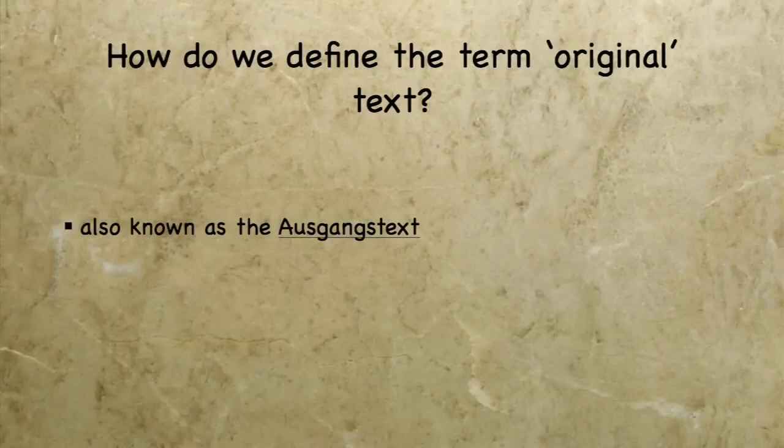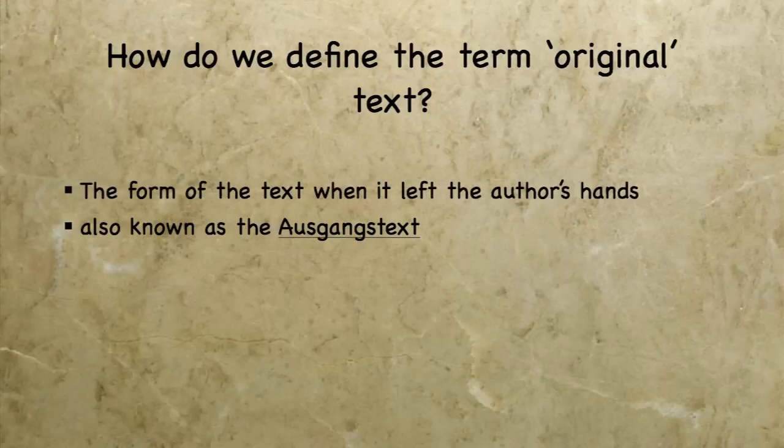Another scholar pointed out that we need to have different ideas of what an original text is, and what he ultimately landed on — I think as the best definition — was what the Germans call the Ausgangstext. That means it's the text that exited from the author as it was dispatched to the readers. This is also sometimes known as the Autographic Text or the Autographs. When an author writes something and then sends it to readers in a different location, as soon as it leaves that author's hands, now we're dealing with that document which is finalized as far as he's concerned. When we say 'original,' it's what leaves the author's hands when it's dispatched to the readers in some other region.